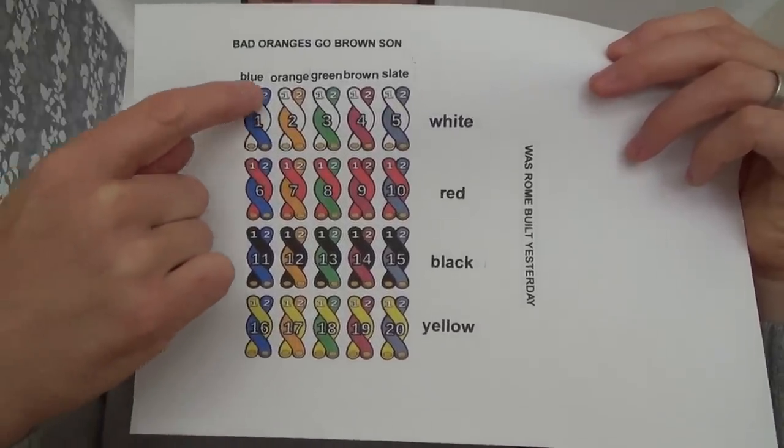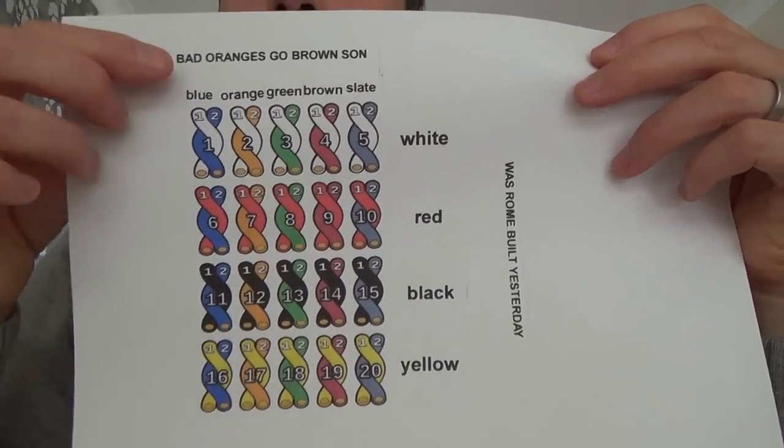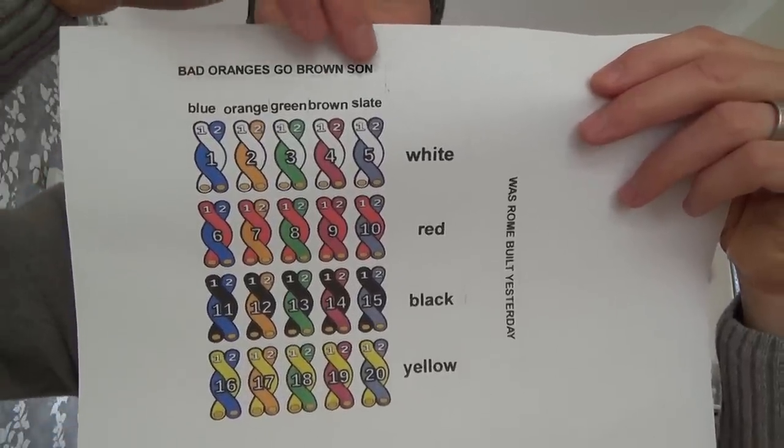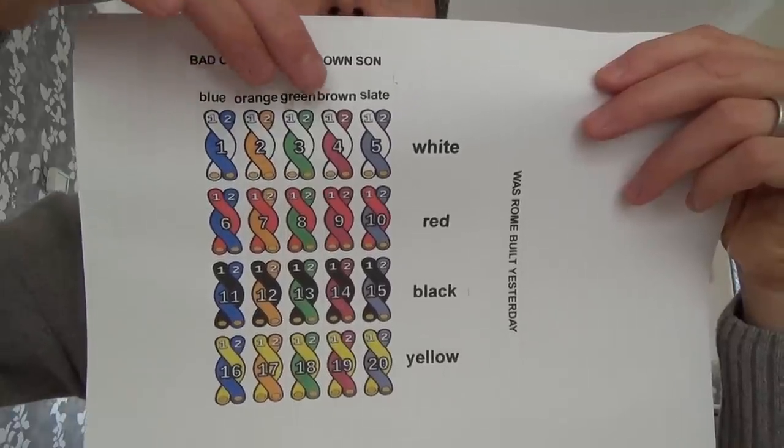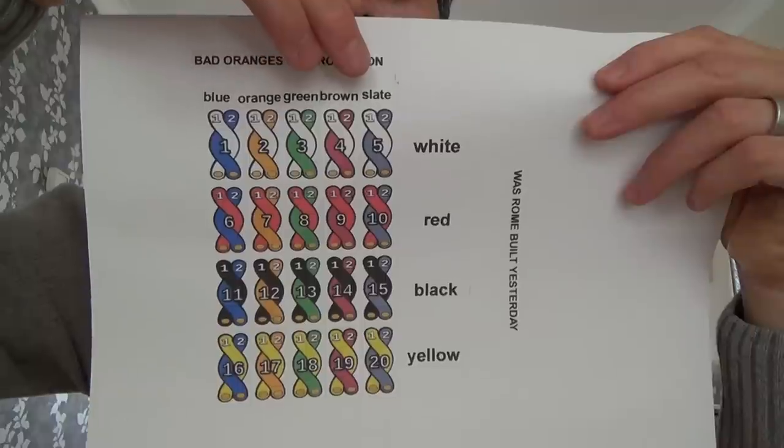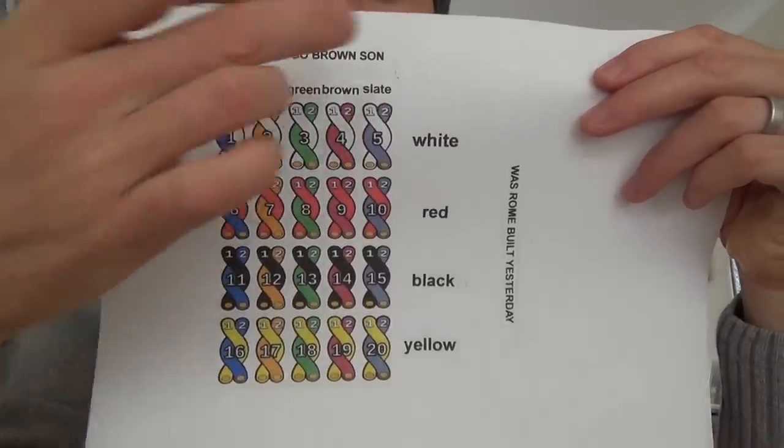So as long as you remember the blue, orange, green, brown slate, you're halfway there. So there's different ways you can remember the order. I used to remember it as bad oranges go brown sun. So blue for bad, oranges, orange, green for go, brown for brown, and sun for slate. So blue, orange, green, brown slate, bad oranges go brown sun. So that's pairs one to five.